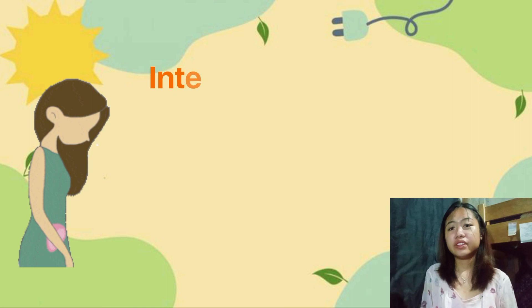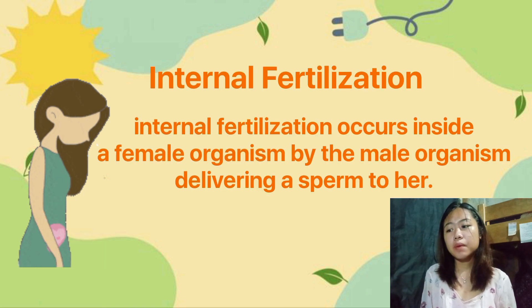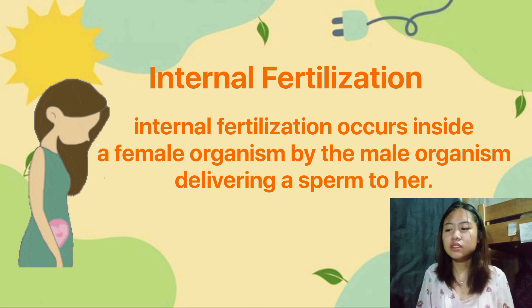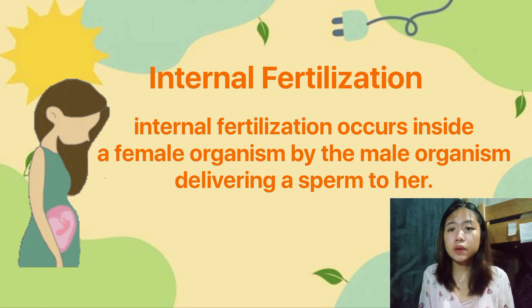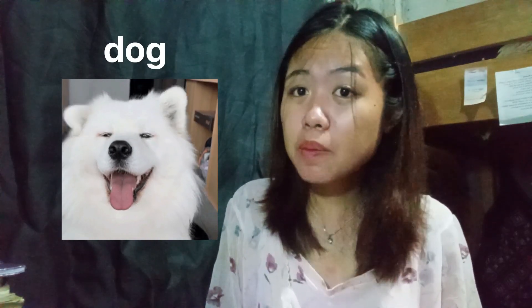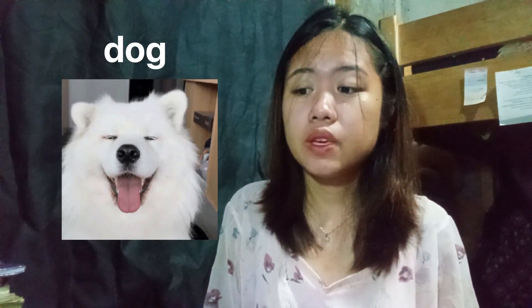What is internal fertilization? Internal fertilization occurs inside a female organism by the male organism delivering sperm to her. This is seen where one organism is carrying and taking care of its unborn baby inside her. In humans, the organism being carried is what we call the fetus or the baby. For example, a dog is a mammal, and usually mammals produce babies inside the mother's womb.